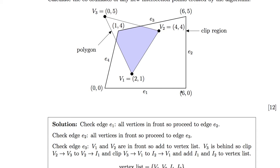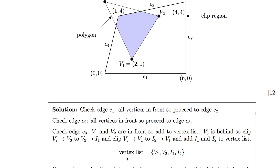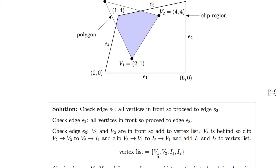With the Sutherland-Hodgman algorithm, we take each edge of the clipped region in turn and check if clipping is needed. Checking the first edge: all points are in front of it, so nothing to do. Edge two: again, all points are in front. Edge three: V1 and V2 are in front so they're added to the vertex list. V3 is behind, so the polygon edge V2 to V3 must be clipped to the first intersection point I1, and V3 to V1 is also clipped to give I2. Our vertex list now has one more vertex than we started with.